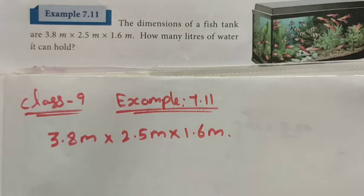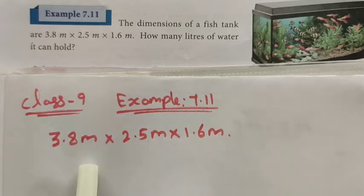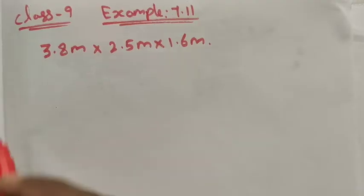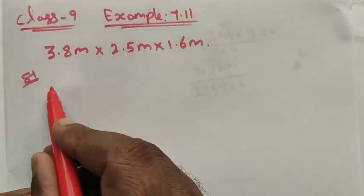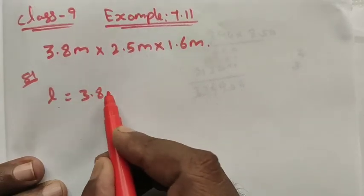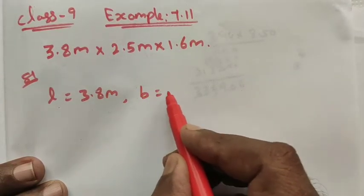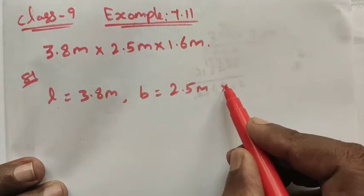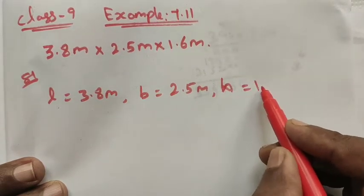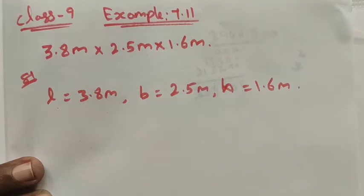How do we decide it is a cuboid? See, the length, breadth, and height are all different dimensions. Let me take length as 3.8 meter, breadth as 2.5 meter, and height as 1.6 meter.